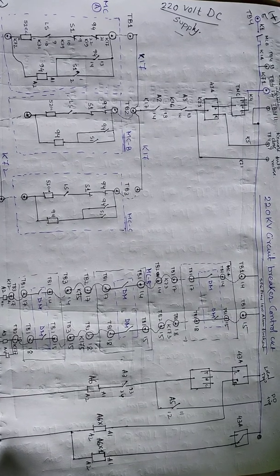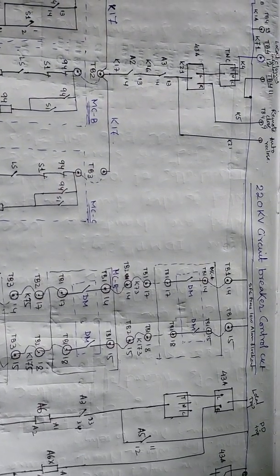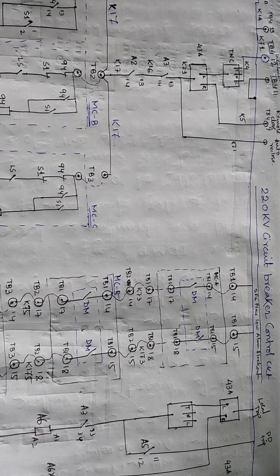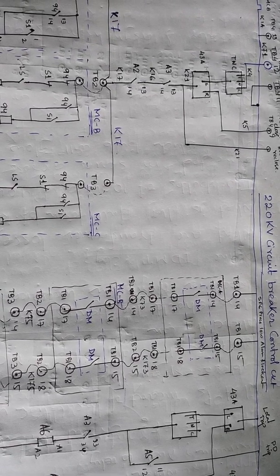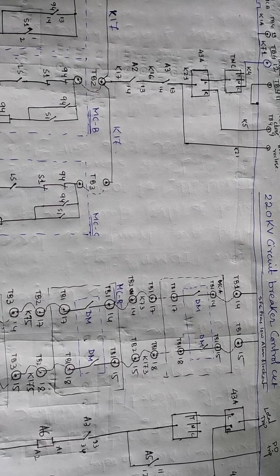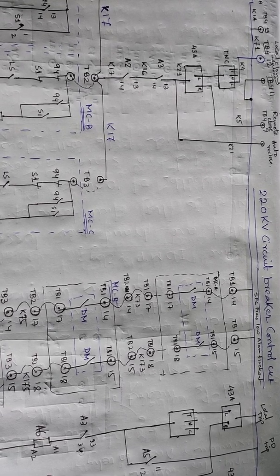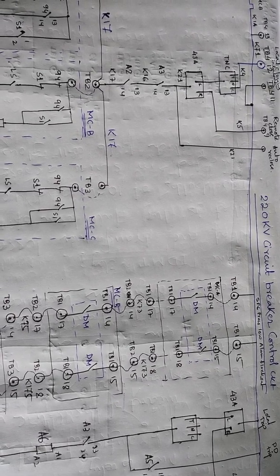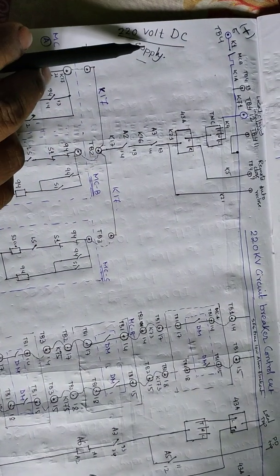Today my discussing topic is about 220 kV circuit breaker control circuit - how the 220 kV breaker control circuit is connected, how the breaker is closed by help of the DC, and how the breaker is tripped by help of the DC. Today we discuss about this circuit.